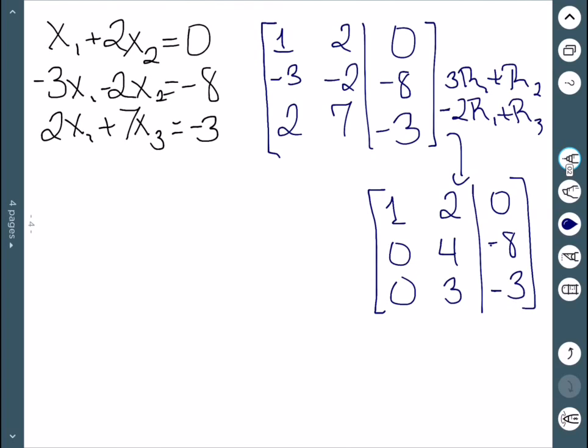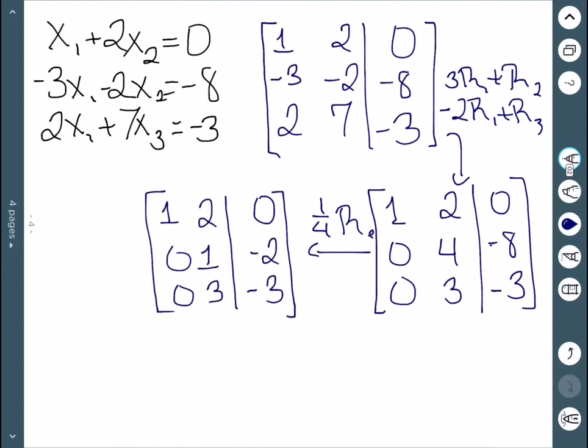And this is what we get once we perform those row operations. The next step would be to get a 1 in the second row, second column. Since it's currently a 4, we'll multiply the second row by 1 over 4. And this is the result.